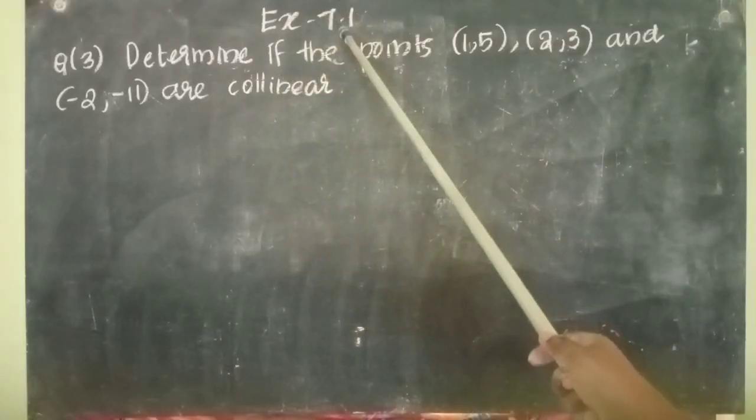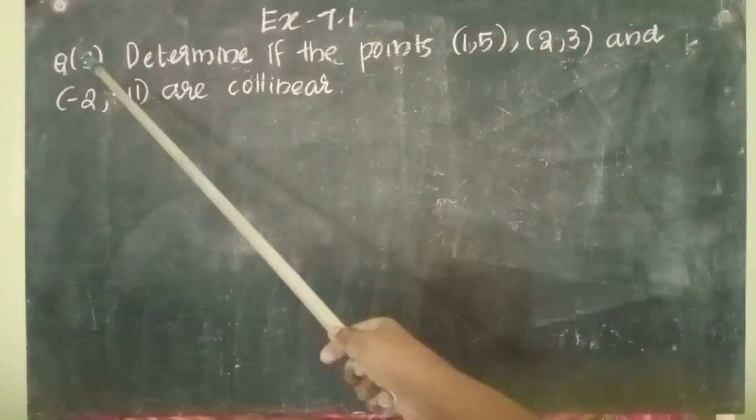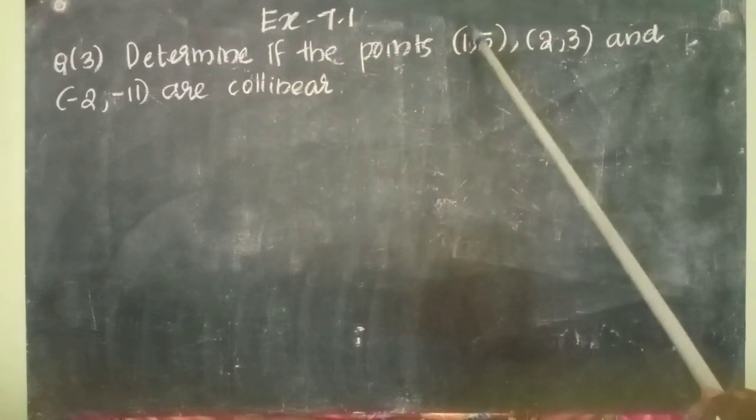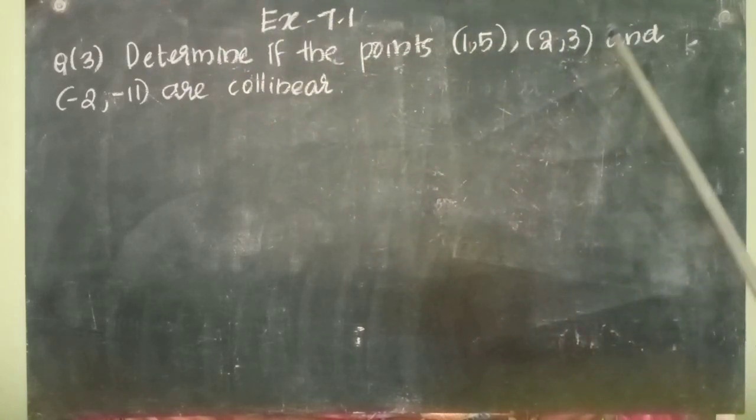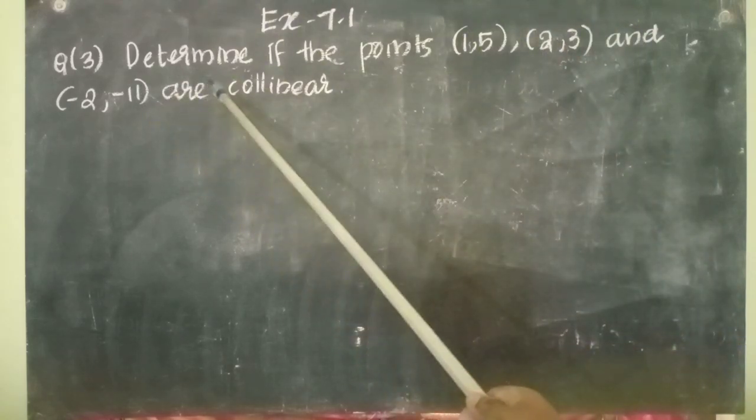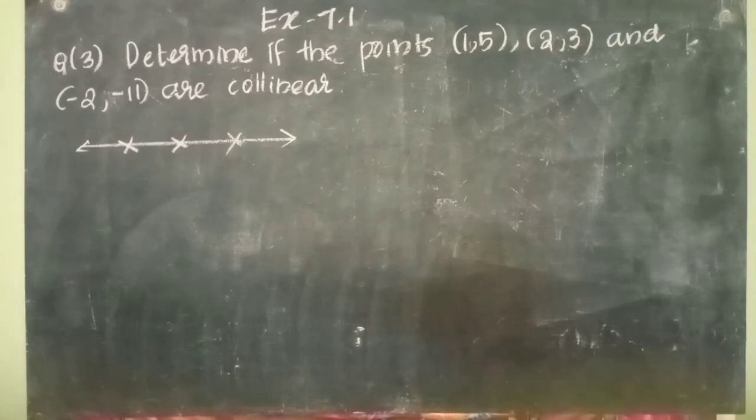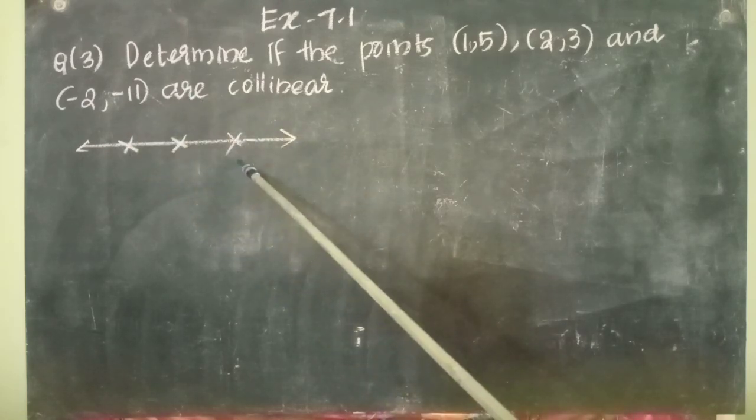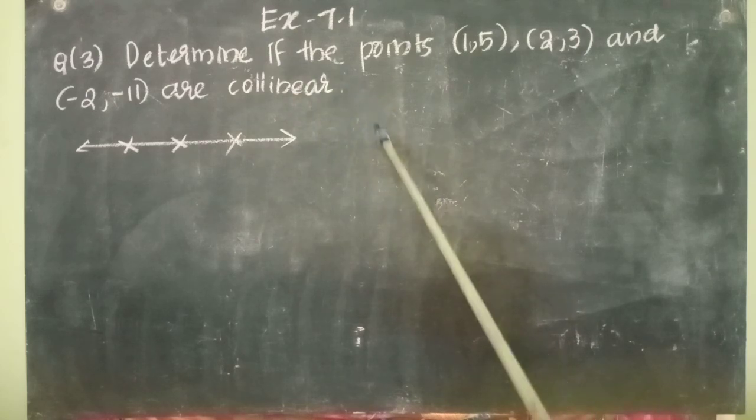Exercise 7.1 Question No. 3: Determine if the points (1,5), (2,3) and (-2,-11) are collinear.